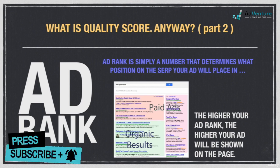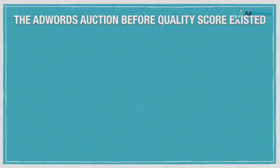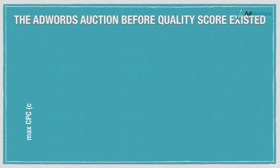Let's take a closer look at how ad rank was calculated in the pre-quality score era. Quality score was introduced in 2005, and up until then, the AdWords auction was a really simple thing. The only thing that really mattered was your max cost per click, or CPC, for any given keyword — in other words, how much you told Google you were willing to pay for an ad click triggered by a specific query.